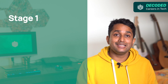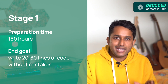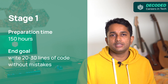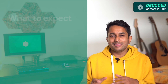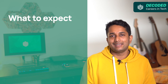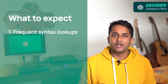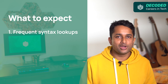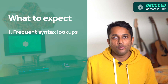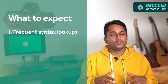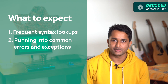Stage one. For this stage, you need to set aside around 150 hours for preparation. The end goal of this stage is to write 20 to 30 lines of code without making too many mistakes. In this stage, you'll be doing a lot of syntax lookups on Google, which is absolutely fine. Don't get discouraged by the idea of Googling things — that's how we learn. With time, familiarity with the language will increase. You're also going to run into common errors and exceptions.